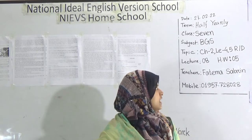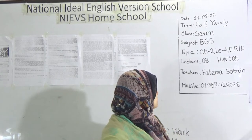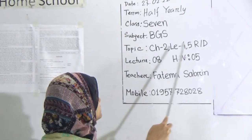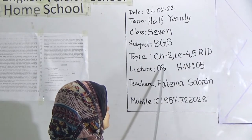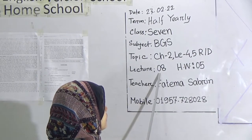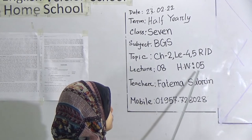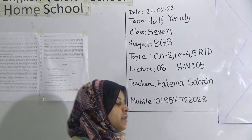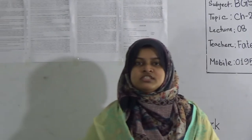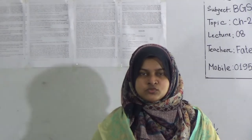I'm repeating: today our topic is Chapter 2, Lessons 4 and 5. And students, you can look here. Our lecture number is 8 and our homework number is 5. Now, students, please take your textbook. I'm going to read from Chapter 2, Lessons 4 and 5. So, let's start.